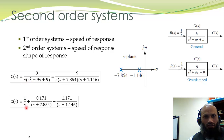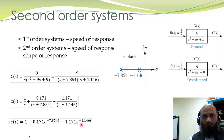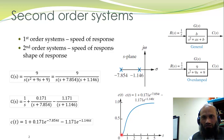Once we have the partial fraction expansion, we take the inverse Laplace transform to get c(t). The inverse Laplace transform of 1/s gives 1, and the other terms give their respective exponential contributions. So for a step input, the output c(t) has the expression shown. This is plotted with time on the horizontal axis and c(t) on the vertical axis, giving an S-shaped response called the overdamped response.